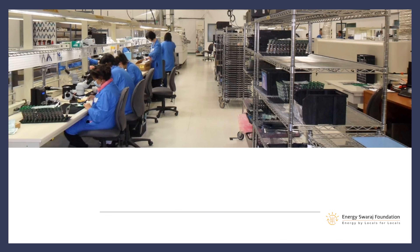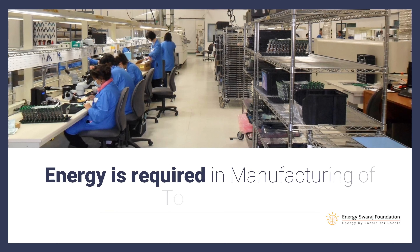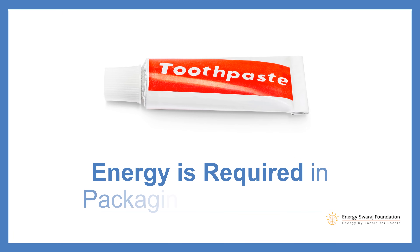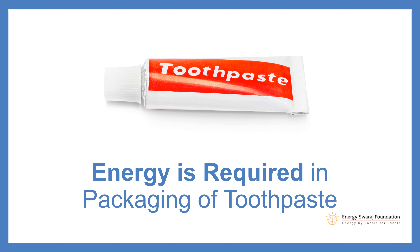In order to brush teeth, the first thing you need is toothpaste. For toothpaste to exist, it first needs to be manufactured — that requires machines, power, and many processes. Not only that, the toothpaste needs to be packaged. For packaging you need cardboard to make the box, and on the cardboard you need to print something — that also requires energy. So packaging also requires energy.